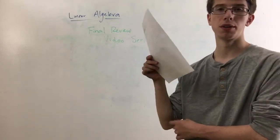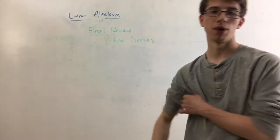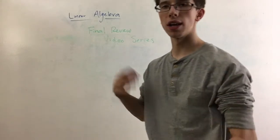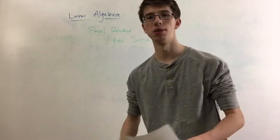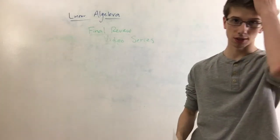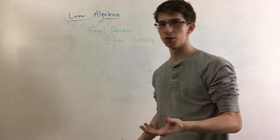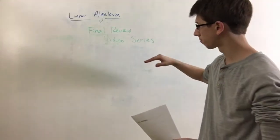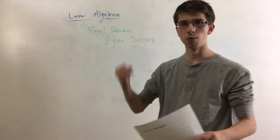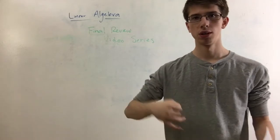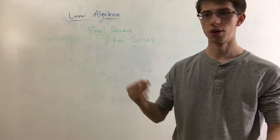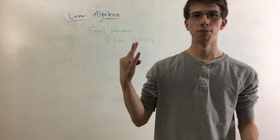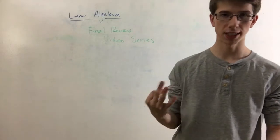The next essential question is: what are the three elementary row operations? The three elementary row operations are what allow you to row reduce your matrix. They are: 1) row swap, 2) row addition, and 3) multiplying by a scalar.